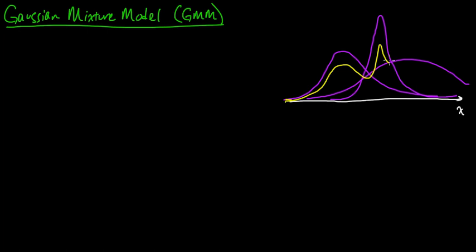And then it's got some of this other guy here. So the PDF for the mixture of Gaussians is going to look something like this, this yellow line here. So that's a one-dimensional example.